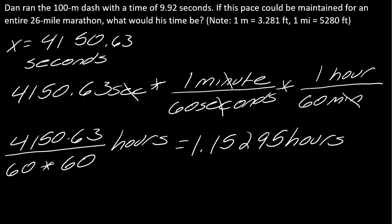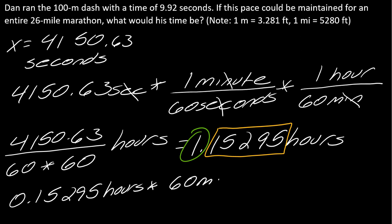If you said it'll take him 1.15295 hours, that's not helpful. So I know it takes one hour and now I need to figure out what is this in minutes. So this 0.15295 in hours. There's a couple different ways you can do this. If I take that and multiply by 60 minutes per hour, that gives me 9.177 minutes.